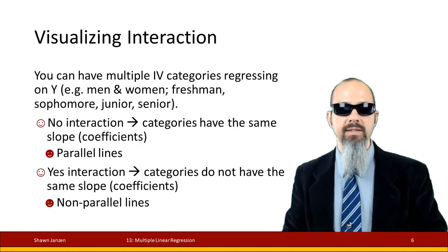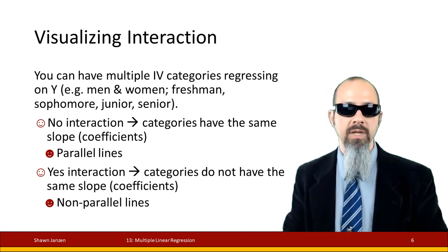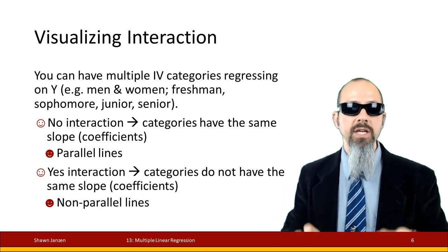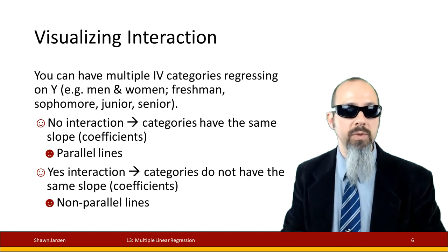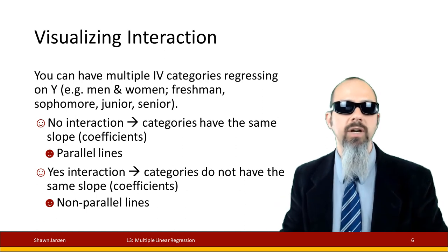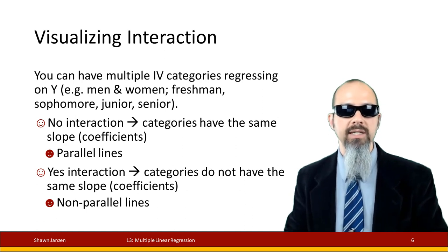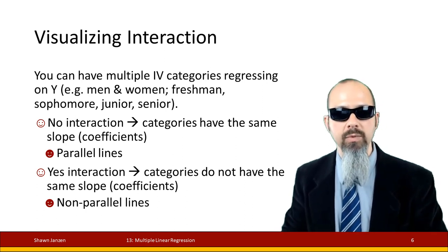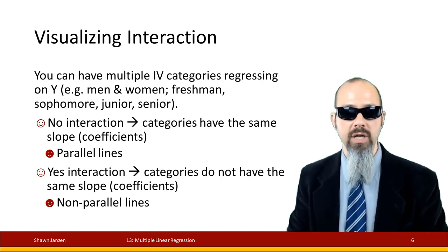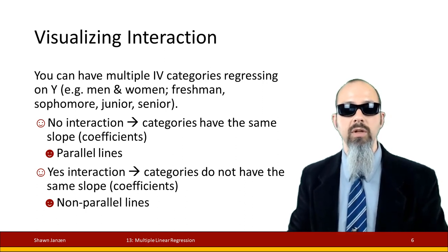So let's see how you can visualize interactions to find them. If you have multiple independent categories — let's say men and women, or freshmen, sophomores, juniors, and seniors — each one of these groups can have their own slopes. When there's no interaction possible, they're going to have the same slopes; the regression lines will be parallel to each other. If there is the potential for interaction effects, then these slopes will not be the same — they will be non-parallel to each other.